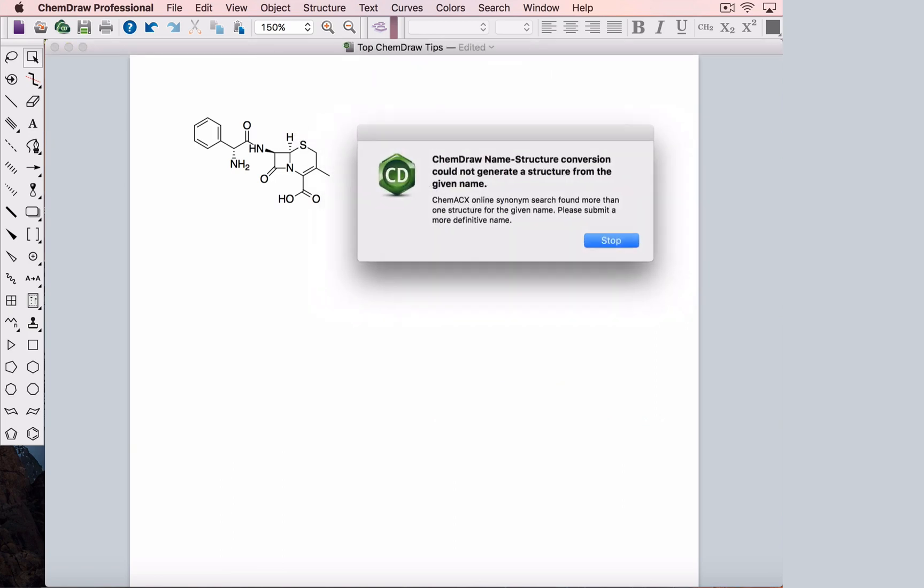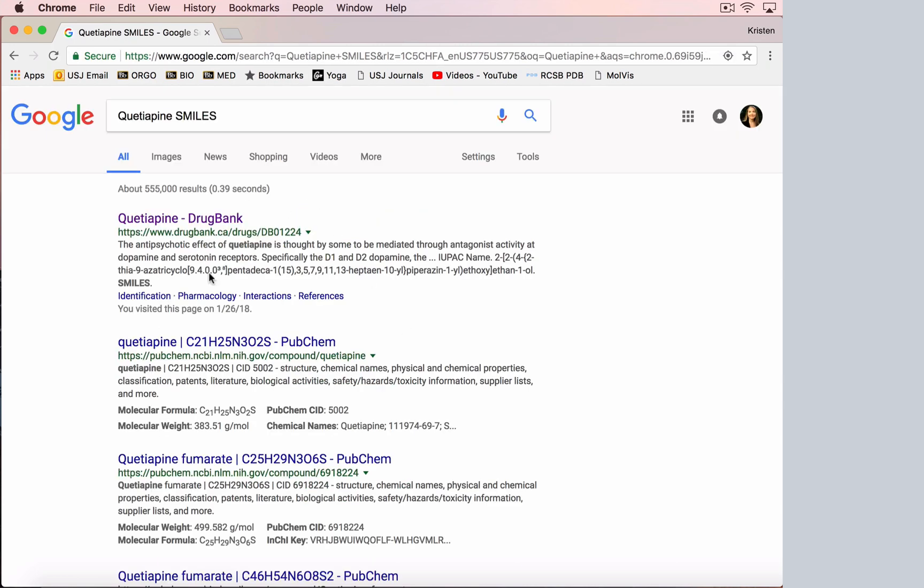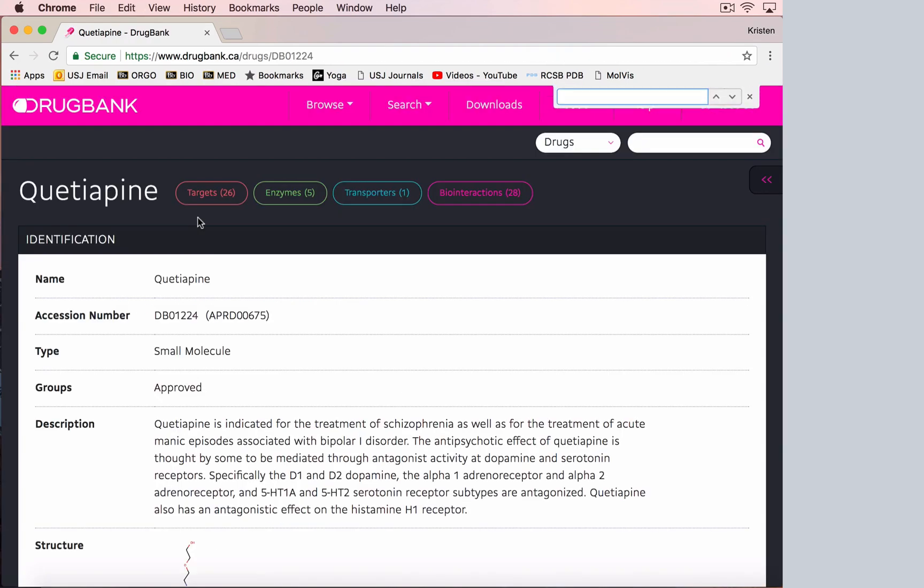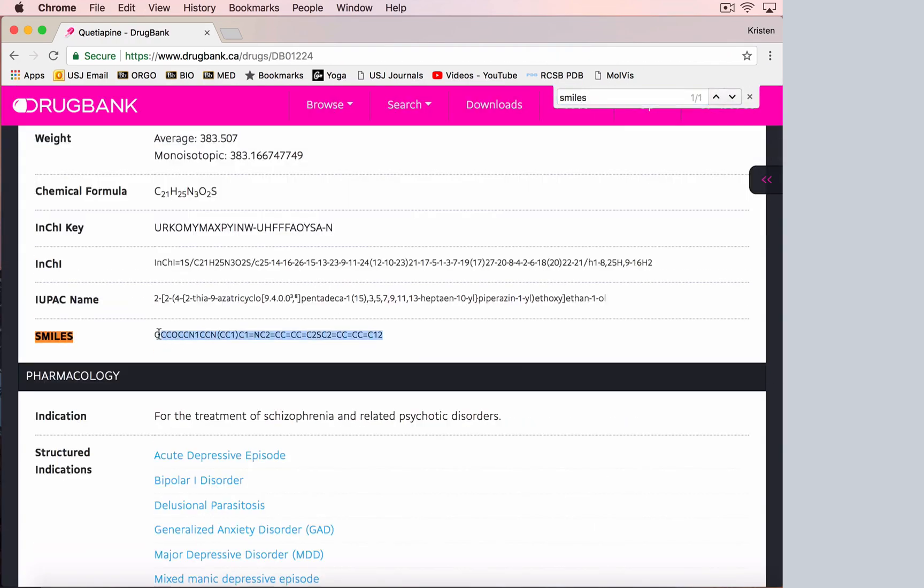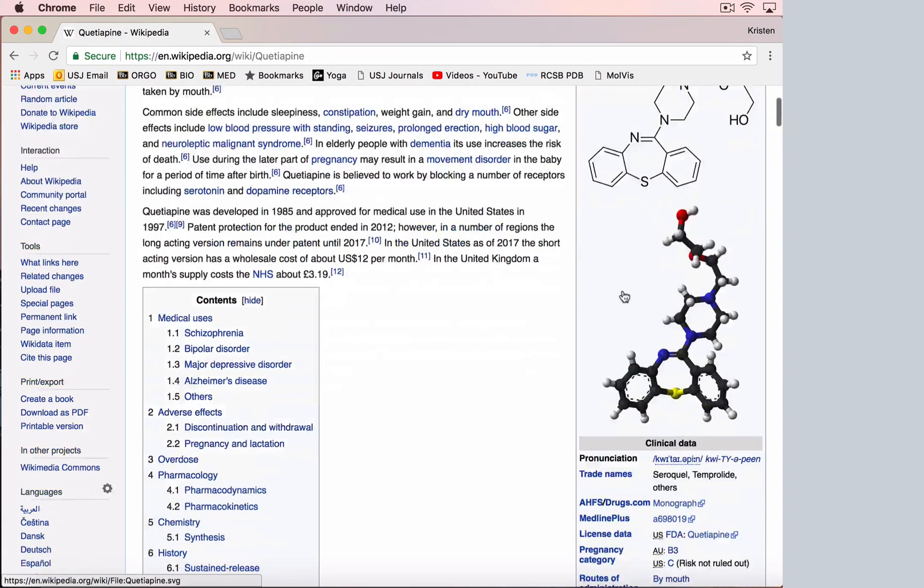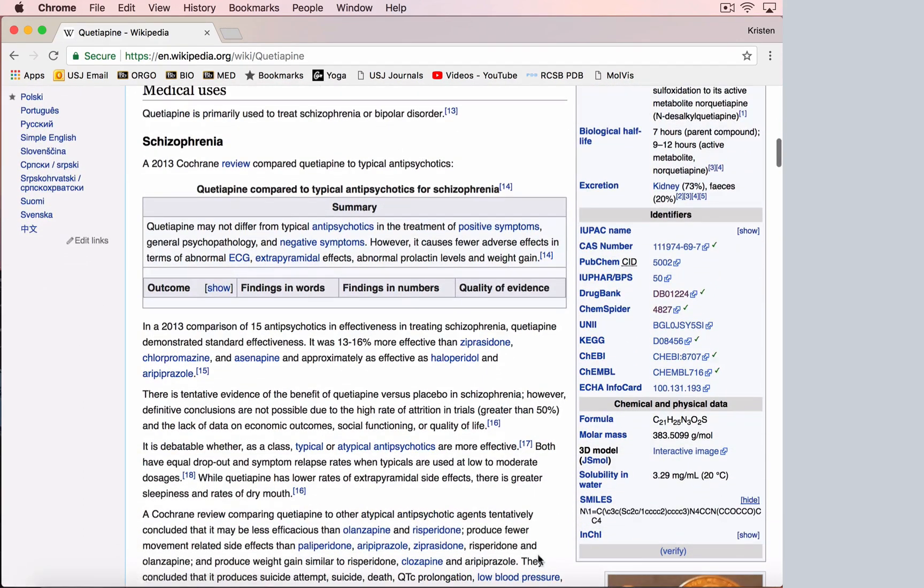Sometimes ChemDraw can't figure out your structure from the name. In this case, you can go online and find a chemical identifier to use. I usually use a SMILES string. Google the compound name with the word SMILES and then you'll be able to use ChemSpider or DrugBank to copy the SMILES string. Wikipedia has SMILES strings also, you just need to click show.